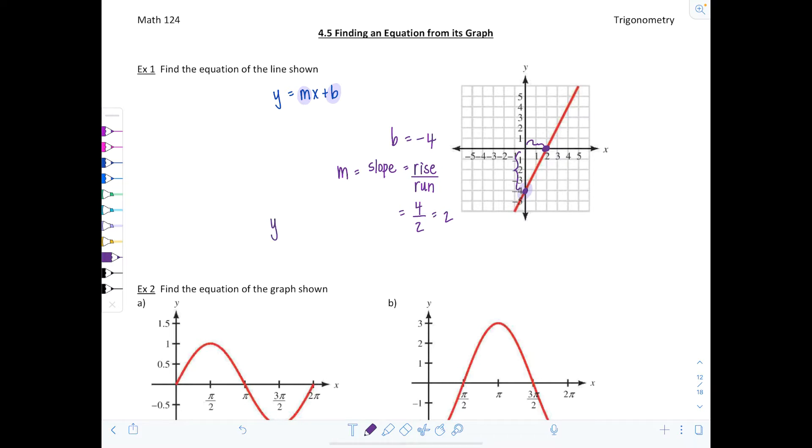And then putting it all together, now I can write the equation of the line and replace M with 2, leave the x in there, and then B is negative 4. Now we're not going to be writing equations of lines in this section, but I just wanted to show you an example of the basic idea.